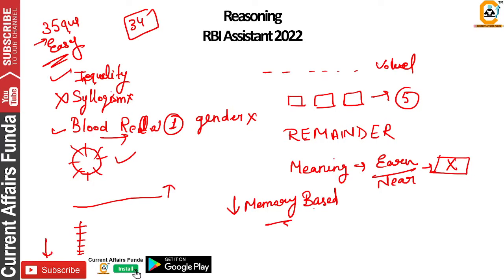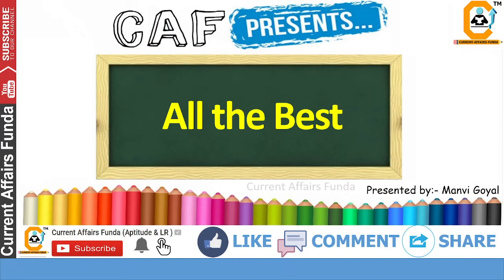For the next level shift, you can solve the reasoning section easily and attempt all the questions. There were no tough questions in reasoning — it was simple. All the best to all the students for today and for the next shift. Do your best. We will solve today's shift memory-based questions in the next video. Thanks for watching, have a nice day.